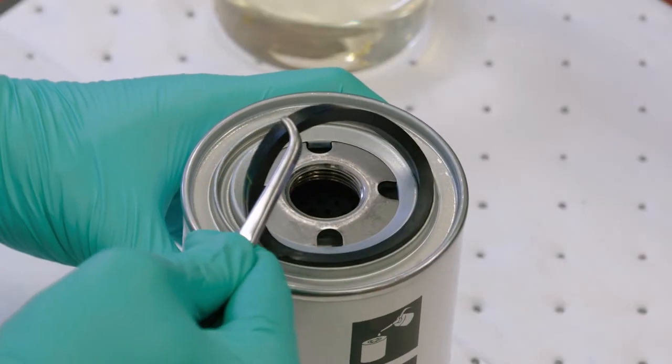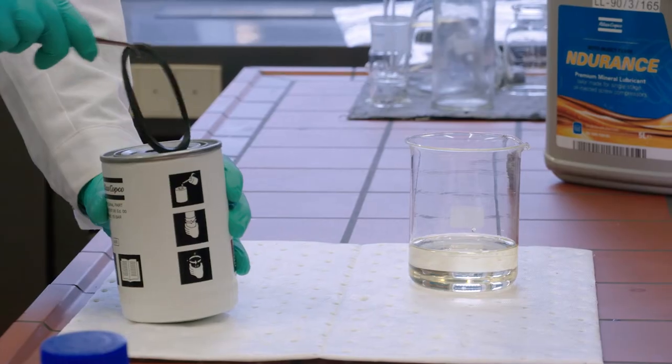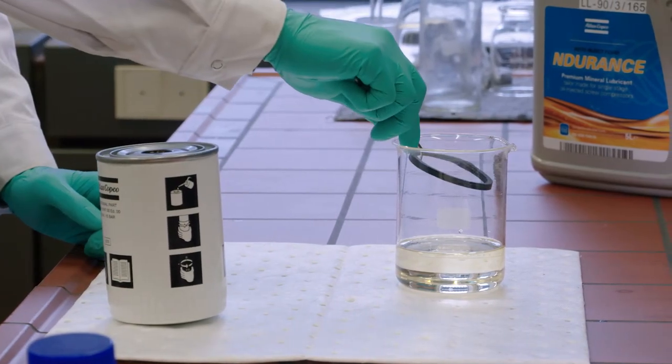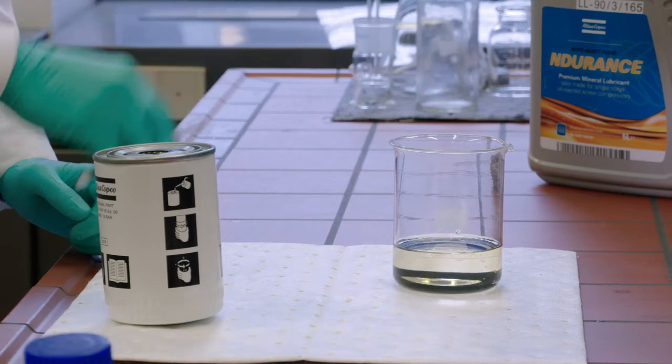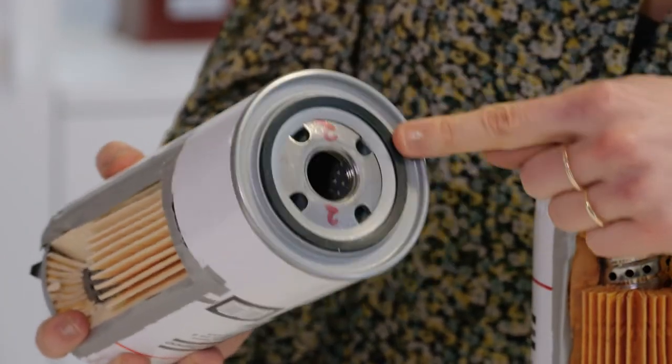A perfect fit of the seal onto the instrument block prevents unfiltered oil from getting through. Its high-quality rubber material withstands the high temperatures and pressures it's exposed to.